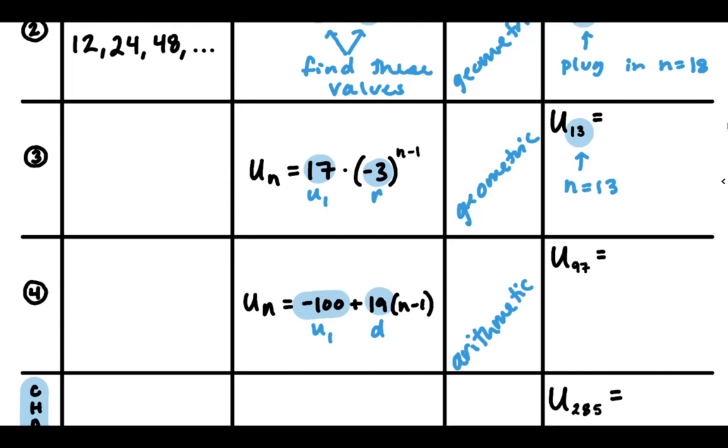And then for your term, 97 is your term number. So you're going to plug in n equal to 97 in your formula. And that's it for the ones you're required to do.